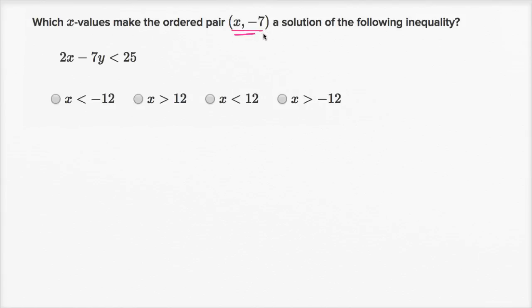Which x values make the ordered pair (x, -7) a solution of the following inequality? The inequality is 2x - 7y < 25. And so they give us some choices, and I encourage you to pause the video and see if you can figure it out on your own.